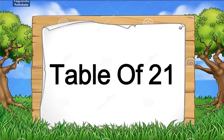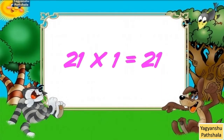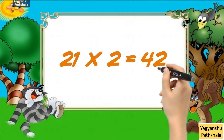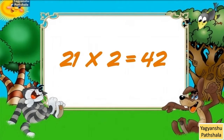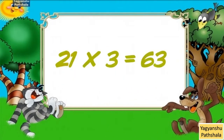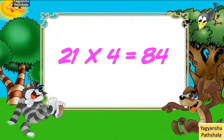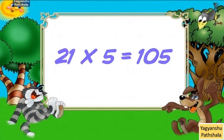Table of 21. 21 1 Jaa 21. 21 2 Jaa 42. 21 3 Jaa 63. 21 4 Jaa 84.